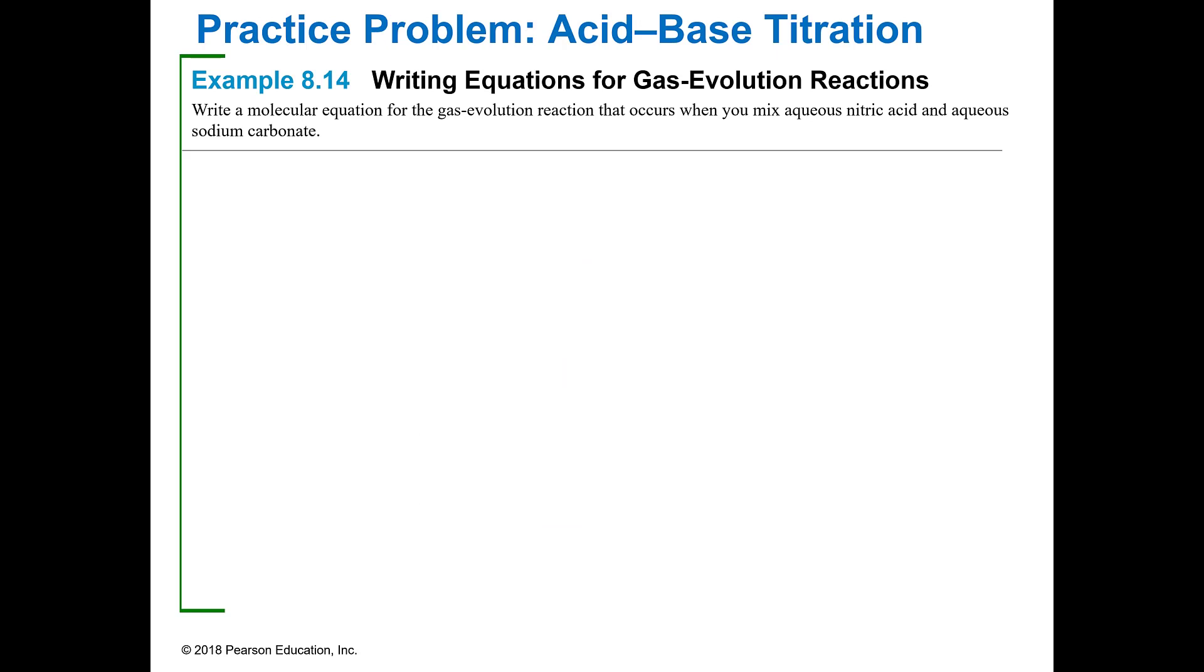You will not have to do this, but I'm going to show you how to write an equation for the gas evolving. Remember, you're only going to have to identify them, but you should be able to do this. You're going to have nitric acid HNO3, which is aqueous, a strong acid, and you're going to add that to sodium carbonate, which is going to be Na2CO3, because this is a plus one, that's a minus two.